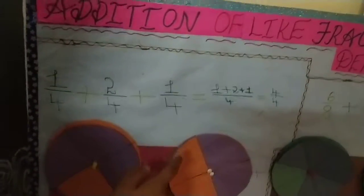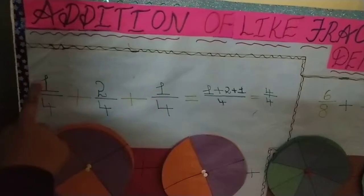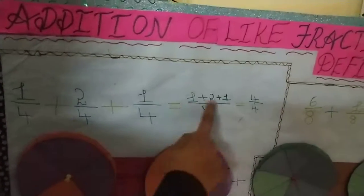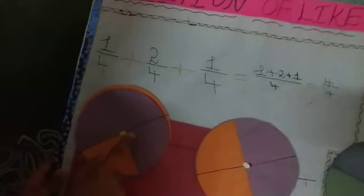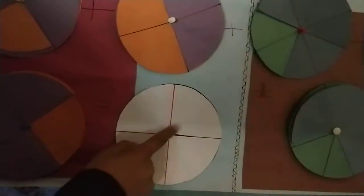How to add this? First, we don't add the denominator because it is a rule in like fractions. We are going to add the numerator. 1 plus 2 plus 1 is equal to 4 by 4. And this is 1 by 4, 2 by 4, 1 by 4 and it is whole 4 by 4.